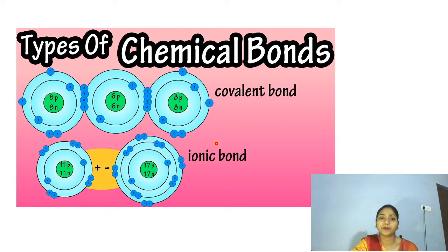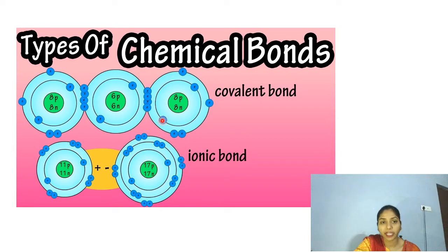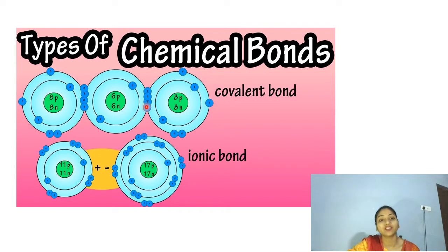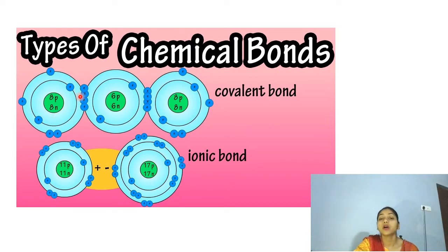Let us discuss these in brief. You can see three atoms, and the outermost shells of two atoms are sharing some electrons in common. These electrons are common between this atom and that atom. Similarly, these electrons are common between these two atoms. Whenever a bond is formed via the sharing of electrons, it is called a covalent bond.